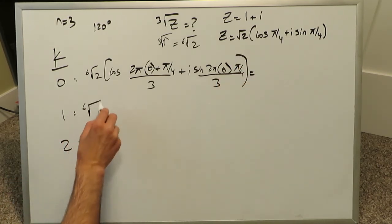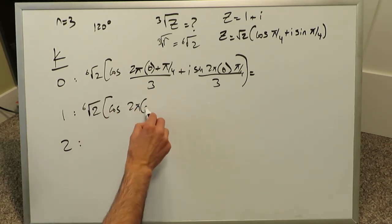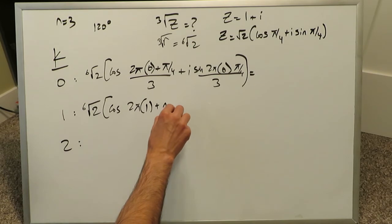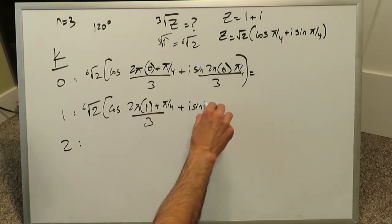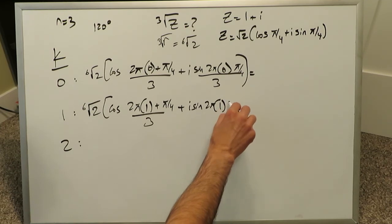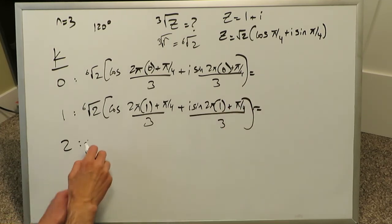Now the next one, we again have this sixth root of this 2, we have cosine 2 pi, here the k value is a 1, plus pi over 4, divided by 3, plus i sine 2 pi k value of 1, plus pi over 4, over 3.